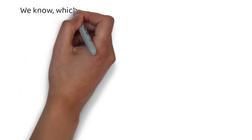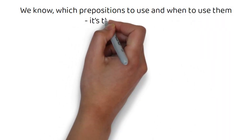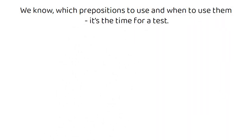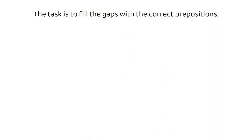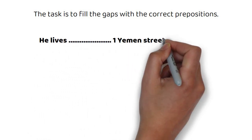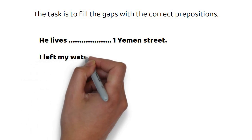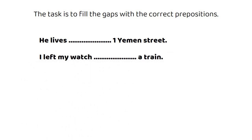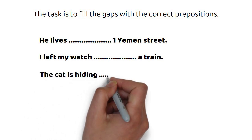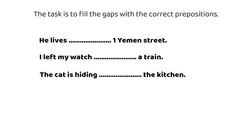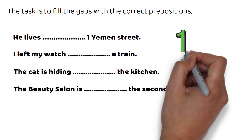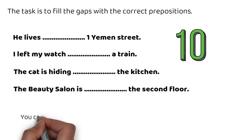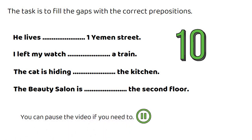Now that we know which prepositions to use and when to use them, it's time for a test. Grab a pen and paper if you want. The task is to fill the gaps with the correct prepositions. Let's go. He lives ___ one Yemen Street. I left my watch ___ a train. The cat is hiding ___ the kitchen. The beauty salon is ___ the second floor. You will have 10 seconds to complete this — but don't worry, you can pause the video if you need to.